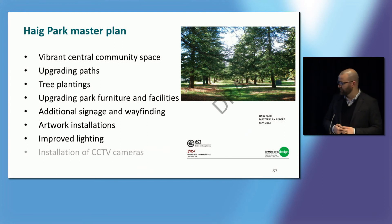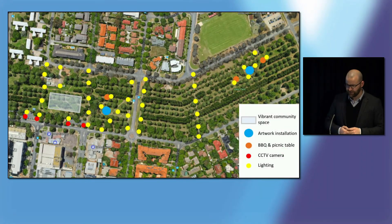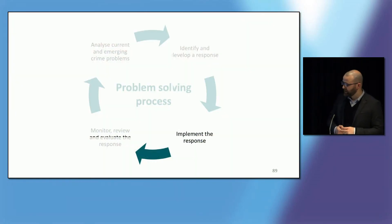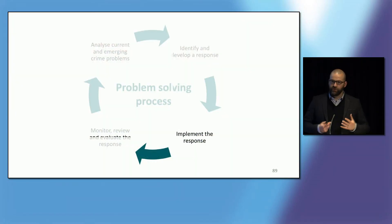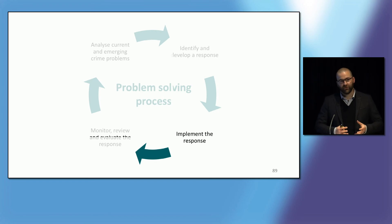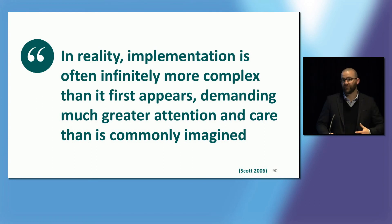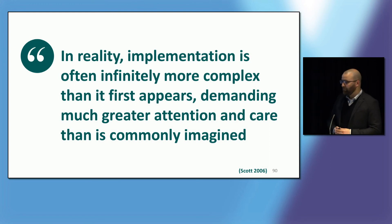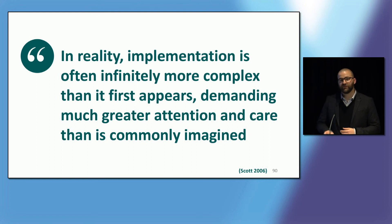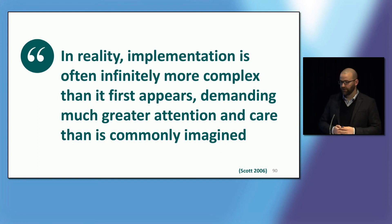I just want to talk briefly about implementing the response and some of the considerations and things I think you should try to reflect in an application. One of the things we see really commonly within crime prevention, and one of the major reasons that crime prevention projects don't work when they don't work, is that they're poorly implemented. Not that they're bad ideas, but they're actually not well implemented. Implementation failure is common, not just in crime prevention but in a whole lot of areas, and that's actually the main reason that projects don't work. So it's really important that you consider that up front.